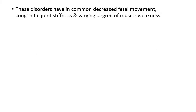Hello, good evening all. Welcome to this talk on Arthrogryposis Multiplex Congenita. This entity, this disorder, is characterized by highly decreased fetal movements. There will be varying degrees of muscle weakness due to dysplasia of muscle, and there will be congenital joint contractures — multiple joint contractures — at least more than three large joints should be involved. These disorders have in common a decreased fetal movement, congenital joint stiffness and varying degrees of muscle weakness.